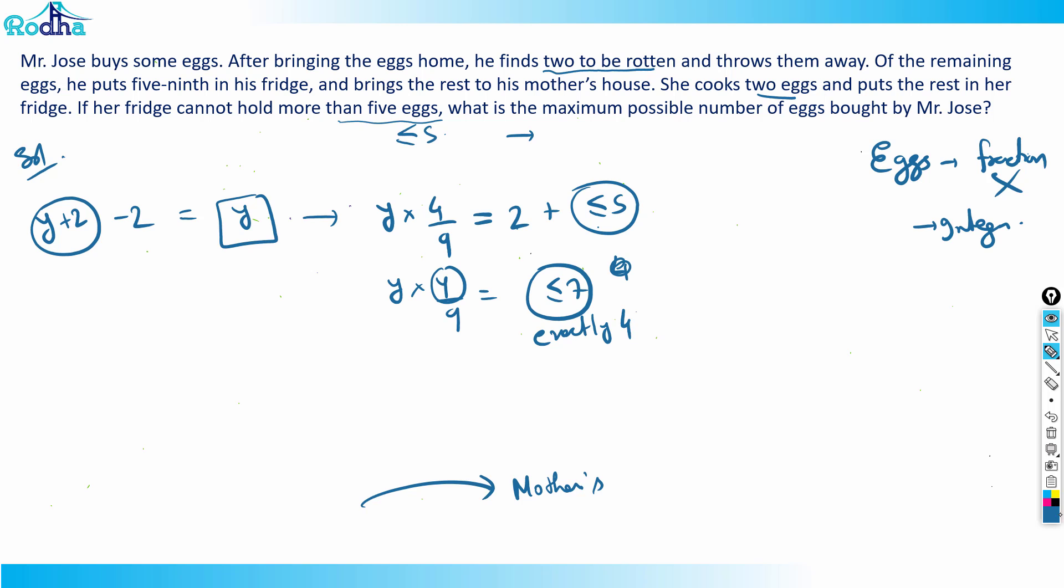Why exactly four? Because in that case, this four and four will get cancelled and we get a value of y as an integer. So y times four-ninths—I need to pick any number less than or equal to seven. Let's pick four. This four and four gets cancelled, therefore y equals nine. That means nine eggs he had after throwing two eggs, so initially he had nine plus two, which equals eleven.